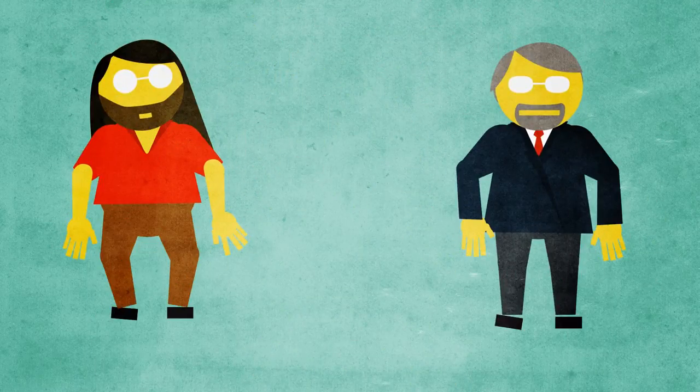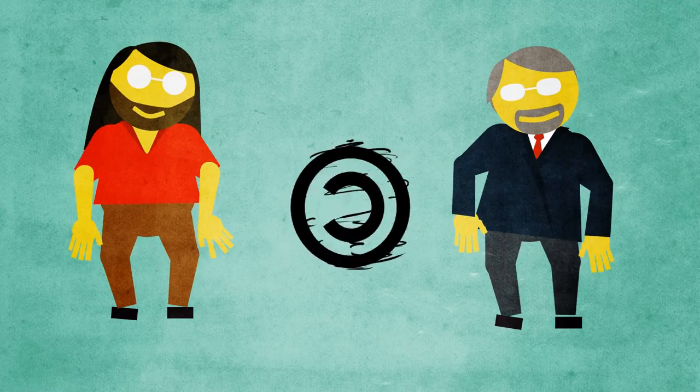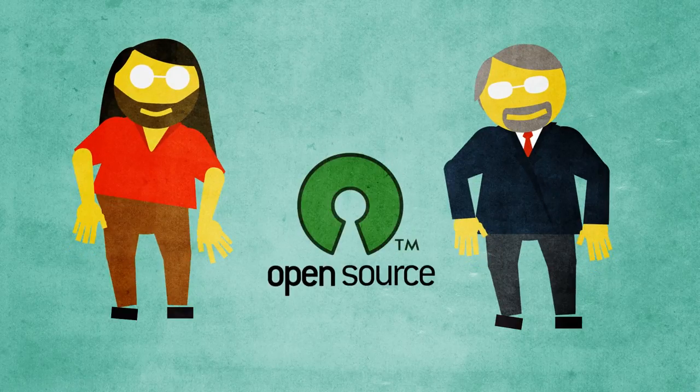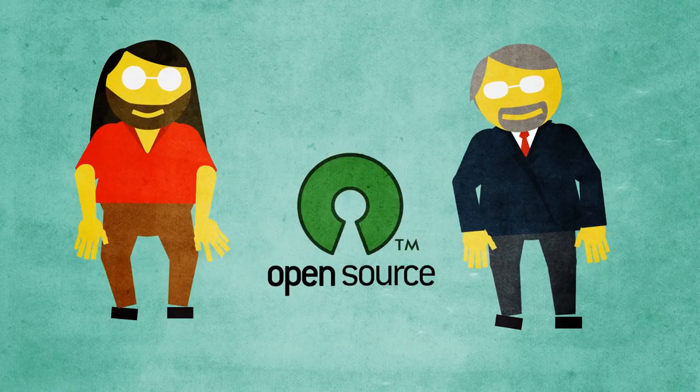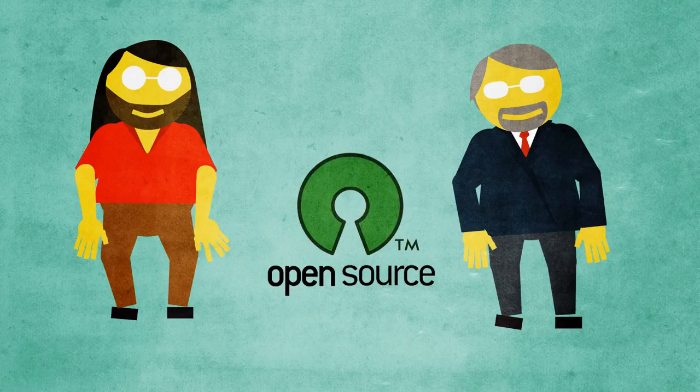Together with law professor Eben Moglen, Stallman developed the General Public License, a type of copyright license sometimes called copyleft. And thus, free, libre and open source software movement was born. Today, open source licensed software is a very common form of knowledge commons where knowledge is shared through software logic and through accompanying open access documentation.